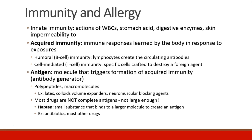Acquired immunity can be further subdivided into humoral immunity, or B cell immunity. These are the lymphocytes which create circulating antibodies that go through the bloodstream. There's also cell-mediated immunity, or T cell immunity — these are specific cells that are crafted in order to destroy a foreign agent.